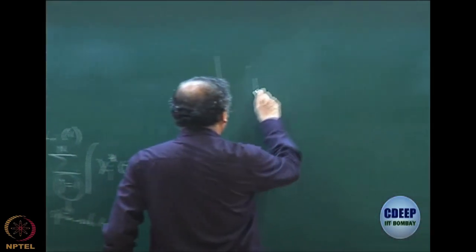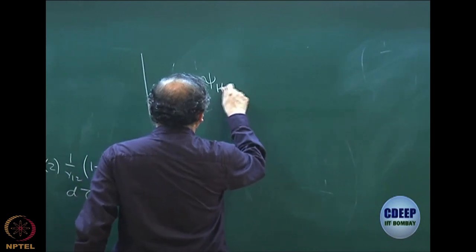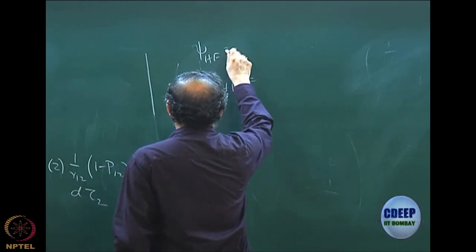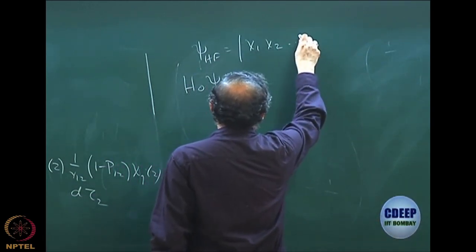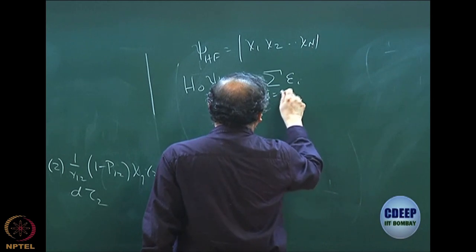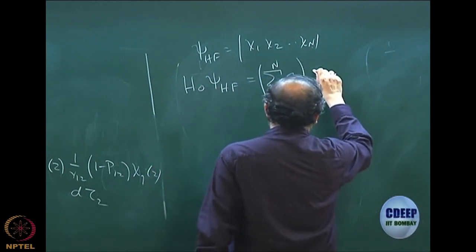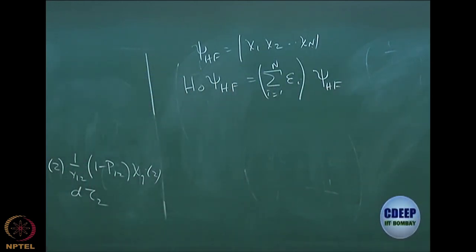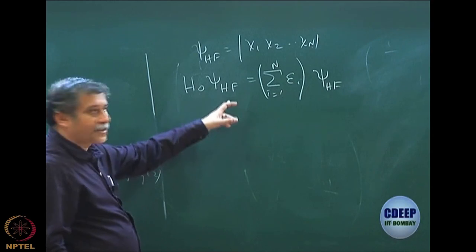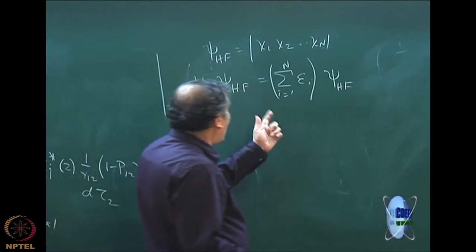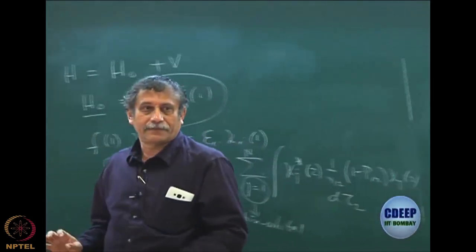Any one-particle function is an orbital or spin orbital depending on whether it involves space or space-and-spin coordinates. So taking an antisymmetric product of these gives me the eigenfunction of H₀. The ground state eigenfunction is H₀Ψ_HF, where Ψ_HF is an antisymmetric product. The eigenvalue equation of H₀ holds because it is a non-interacting problem, and the eigenvalue is simply the sum of the orbital energies.